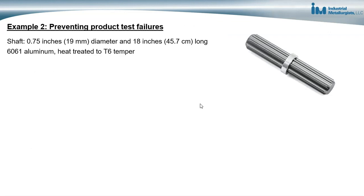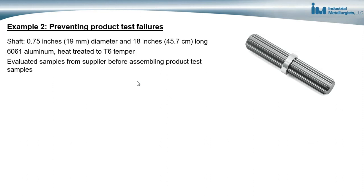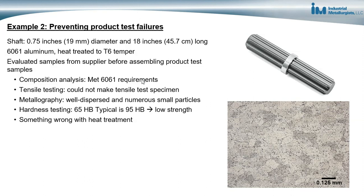The second example is preventing product test failures. A product was using an aluminum shaft — three-quarters of an inch in diameter, about 18 inches long — specified to be 6061 aluminum heat treated to a T6 temper. This involves a series of heat treatments to meet the minimum yield and tensile strength requirements for 6061-T6. I was working with the company making the product, and we got samples from the supplier before assembling the product test samples.